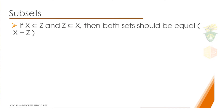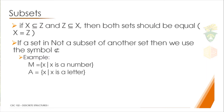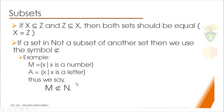If two sets are subsets of each other — meaning if X is a subset of Z and Z is a subset of X — then both sets should be equal. Since all the values in X are found in Z and all the values in Z are found in X, we can conclude that the two sets are equal. If a set is not a subset of another set, we use a different symbol. For example, M is a set of numbers and A is a set of letters, so since there could be no numbers found inside the set of letters...